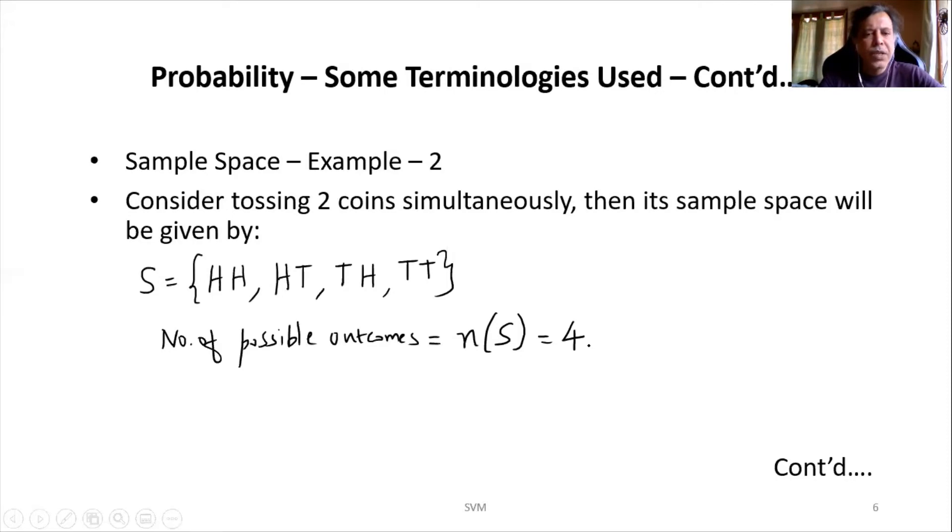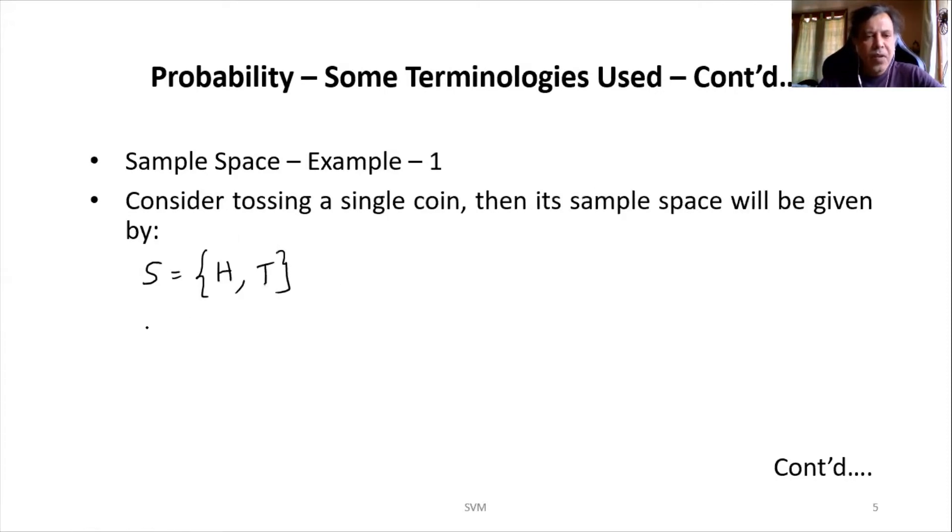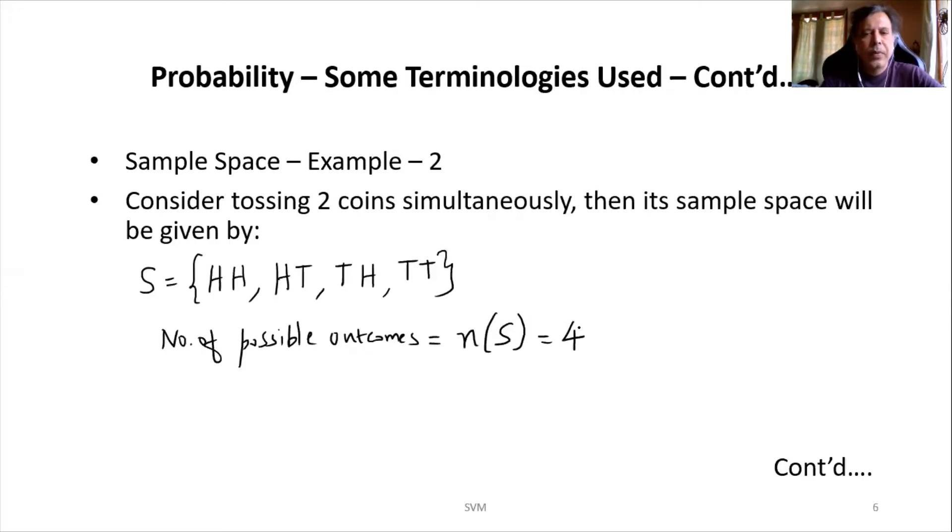Now we'll go back to the previous one. In this case, number of possible outcomes—in this case, N(S)—there are only two outcomes. So I'll write it as 2. So this is about the second example. Now let us move on to the third one.